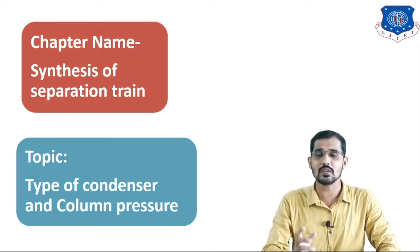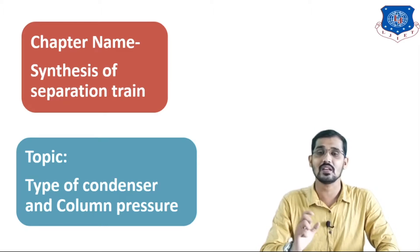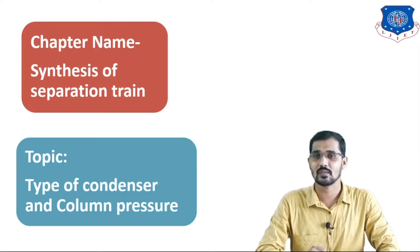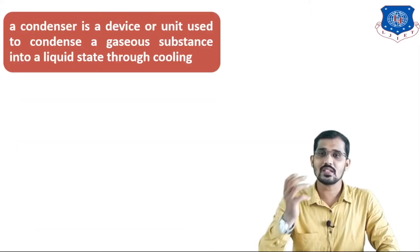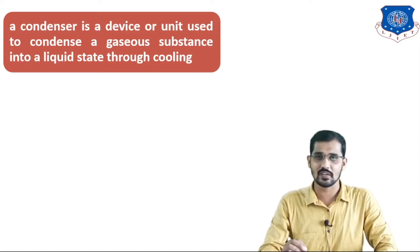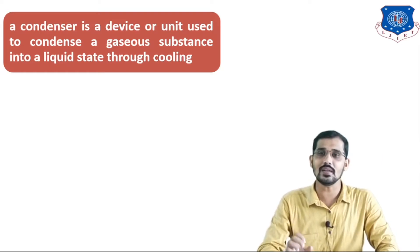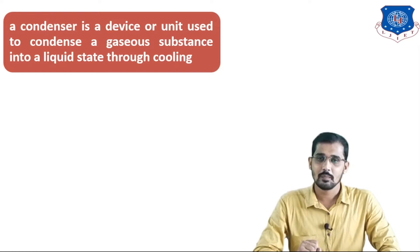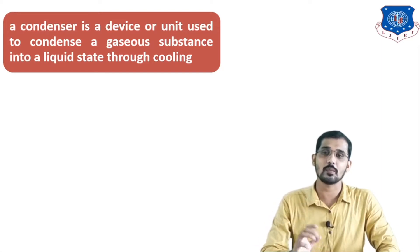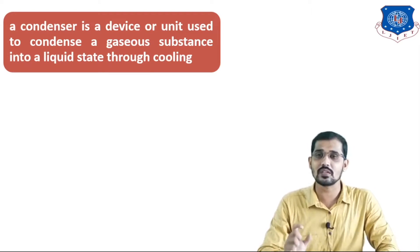In this lecture, I will explain different types of condensers and how to use them in a distillation column. According to the definition, a condenser is a device or unit used to condense a gaseous substance into liquid state through cooling. There are different types of condensers used in industry.